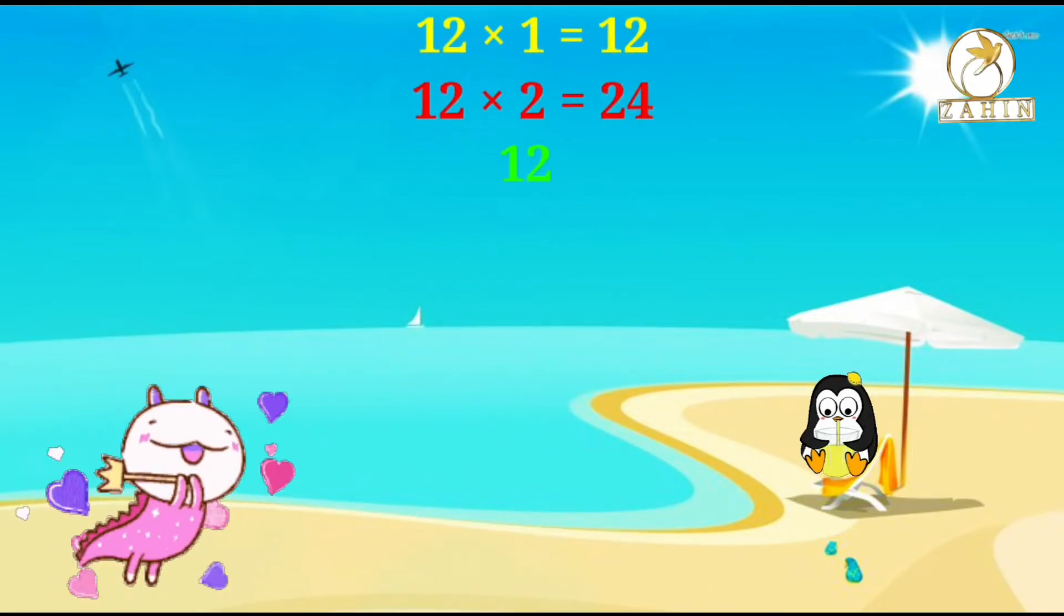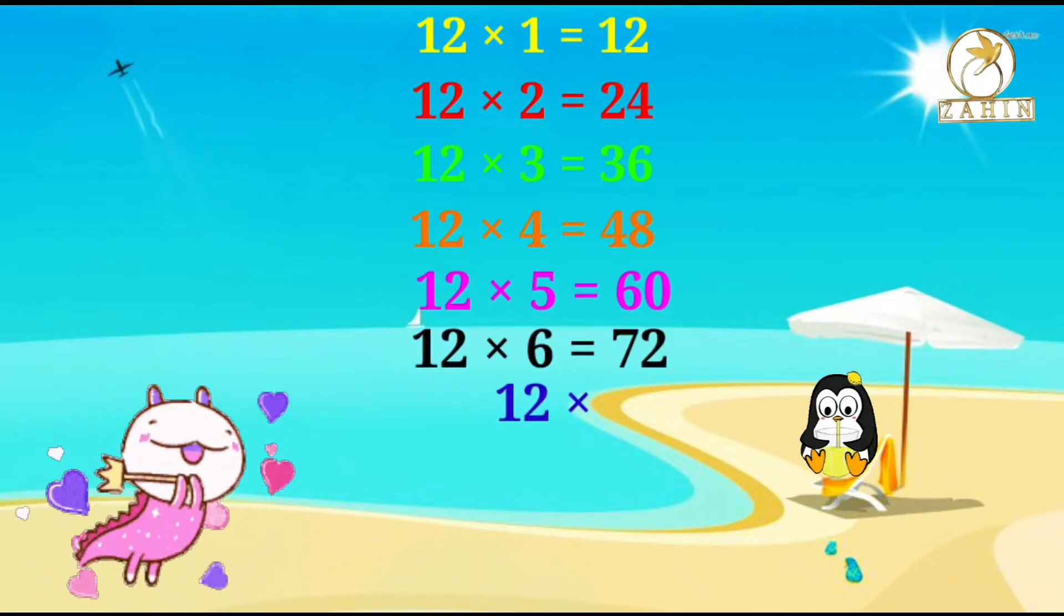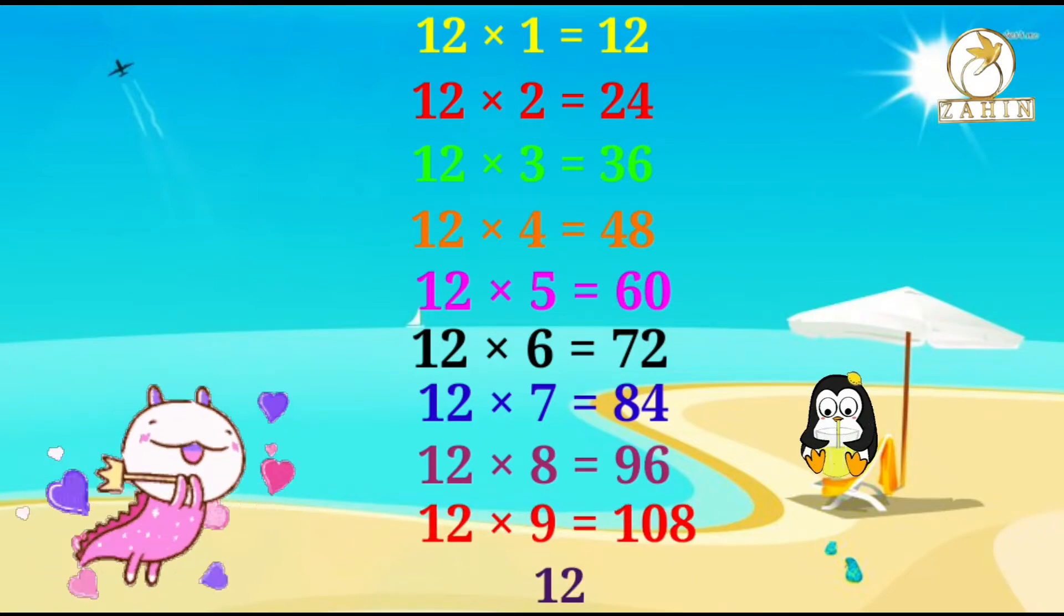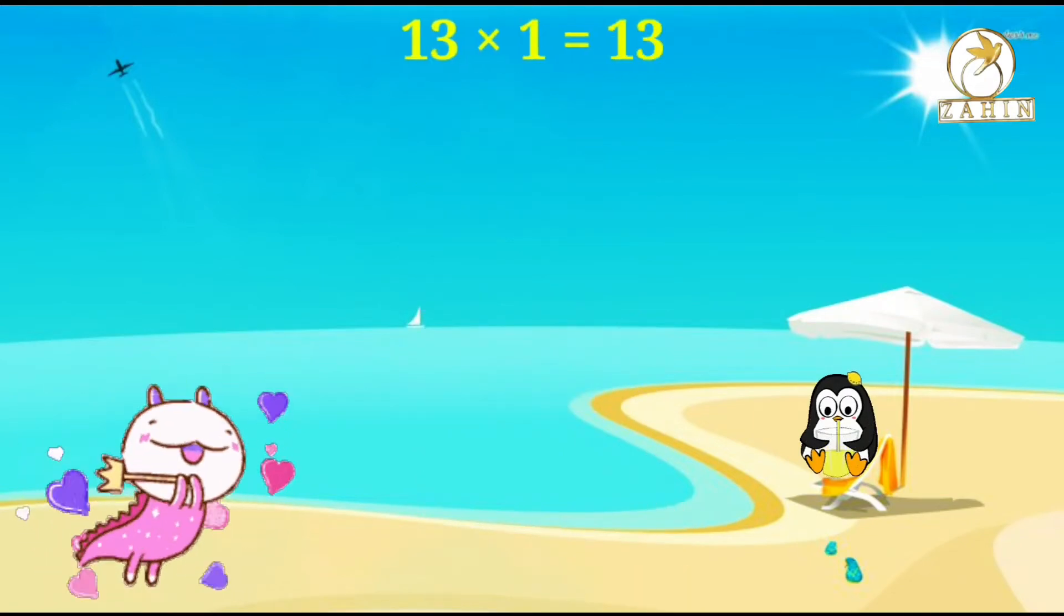12 times 2 equals 24, 12 times 3 equals 36, 12 times 4 equals 48, 12 times 5 equals 60, 12 times 6 equals 72, 12 times 7 equals 84, 12 times 8 equals 96, 12 times 9 equals 108, 12 times 10 equals 120. 13 times 1 equals 13.